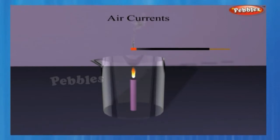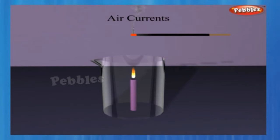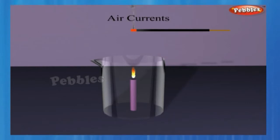When the incense stick is kept a little above the candle, smoke flows out of the beaker. When kept in other regions, smoke deviates in different directions. The patterns revealed by the smoke show us the directions in which hot and cold air move.